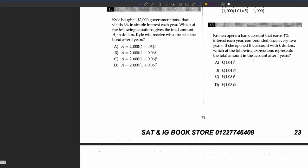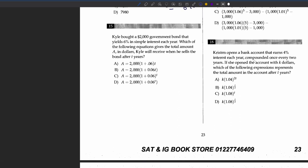Last question: Christian opens a bank account that earns 4 percent interest each year, compounded once every two years. If she opened the account with k dollars, which expression represents the total amount after t years? Since it's compounded once every two years, the exponent is t/2. We can eliminate a and c. Since the interest rate must be doubled to get the rate earned over a two-year span, the 4 percent becomes 8 percent. Thus the answer is d.